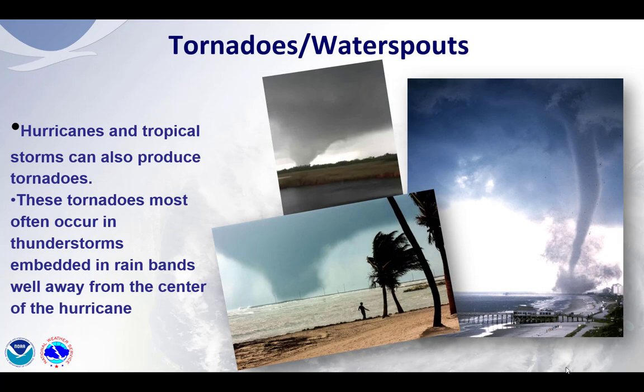Hurricanes and tropical storms can also produce tornadoes and waterspouts. These tornadoes and waterspouts most often occur in thunderstorms embedded in rain bands. Some of these rain bands will be far away from the center.